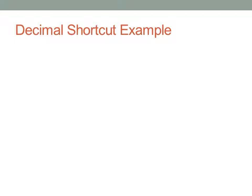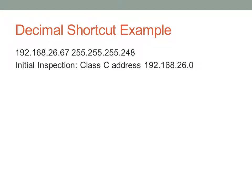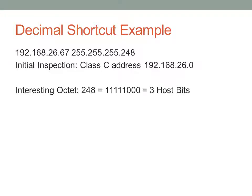Let's look at an example. We have a class C network — just looking at the 192, I immediately know class C. Then we have a different subnet mask; you'll notice it doesn't fall on an octet. The break from ones to zeros happened somewhere in the last octet. The initial class C network address is 192.168.26.0. We look at the interesting octet, which is the last octet: 248. You should have these in-between values memorized — 248 is five 1s.